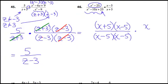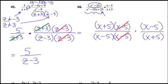On the far right I have x minus 5, which can't be factored, and x plus 5, also can't be factored. Now I remove my common factors — one on the top, one on the bottom. When you remove them, they are equal to 1. So x plus 5 over x plus 5 equals 1, and x minus 5 over x minus 5 equals 1.